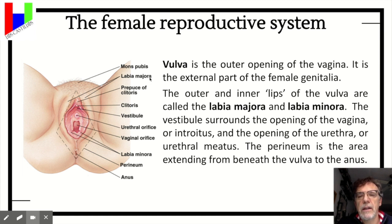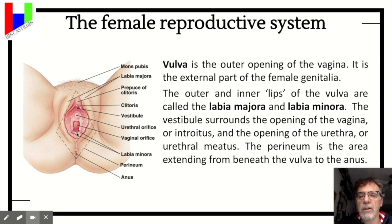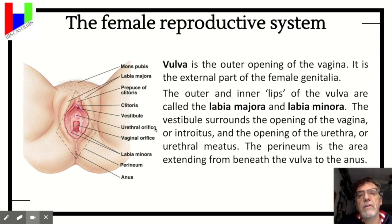The labia majora is very similar to the scrotum in males. Inside we have the labia minora, which protects a part called the vestibule, in which we find the urethral orifice — this part is for urine — and the vaginal orifice.